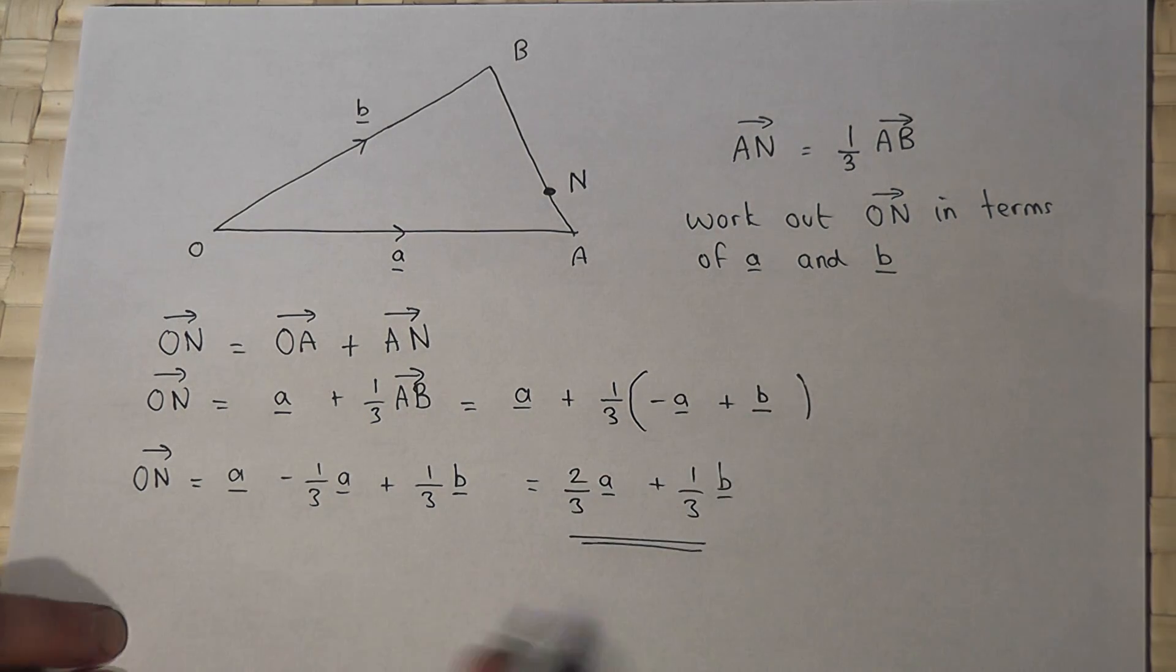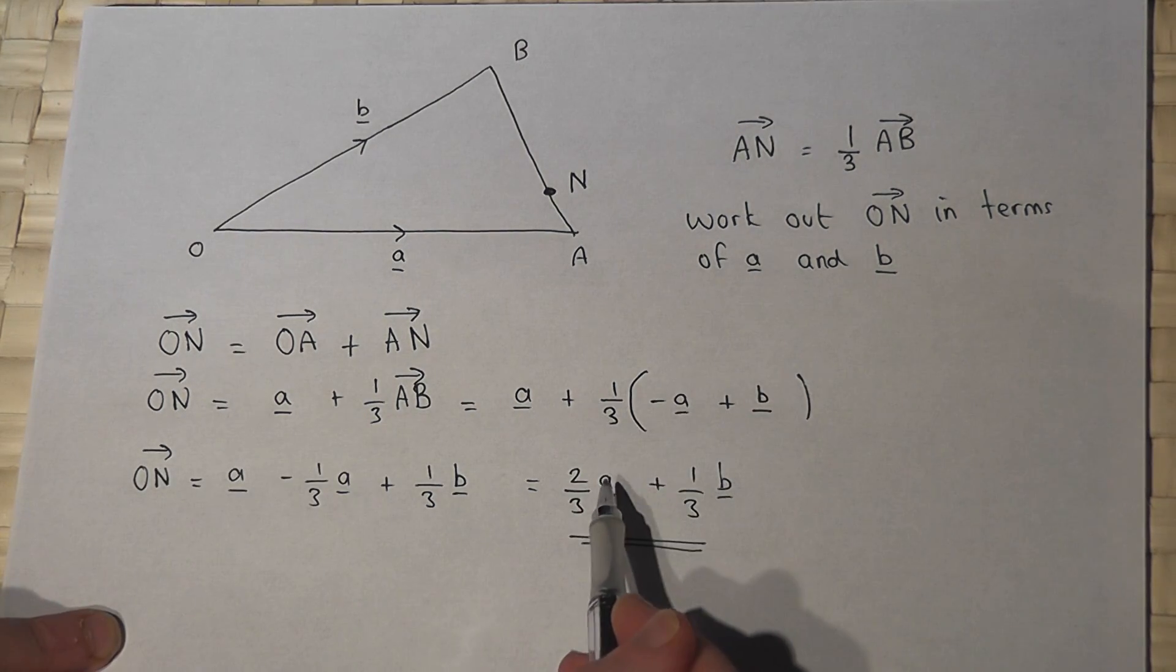So there we go. I have written O to N in terms of A and B.